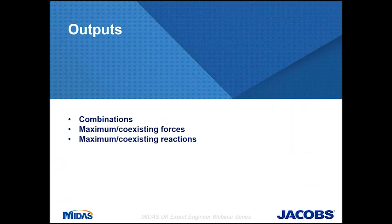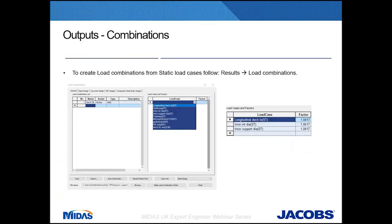Once structure groups are created, you can request outputs for them for a specific load case or combination, selecting one or more structure groups at a time within the Records Activation dialogue. In this section I will concentrate on combinations, maximum and coexisting forces, and maximum coexisting reactions — the latter two especially played an important part in the assessment of the structure during the jacking stage. To create load combinations, click Results and then Load Combinations. I tend to create all load combinations in Excel after extracting separate static and live load cases and multiplying them by safety partial factors from the relevant standard, as it is easier to document, record and track findings.